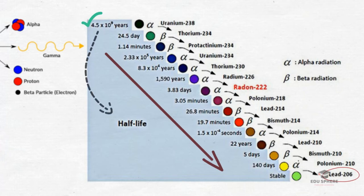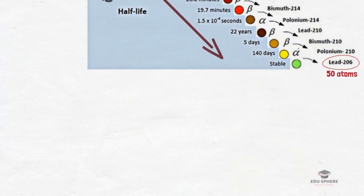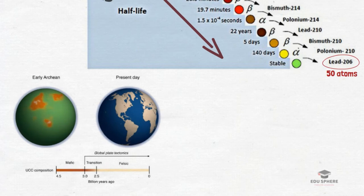It takes around 4.5 billion years for uranium-238 to convert to lead-206 through radioactive decay — so 4.5 billion years is the half-life of uranium, meaning 100 atoms of U238 would become 50 after 4.5 billion years. Since Earth was formed about 4.5 billion years ago, we can imagine dating excavated objects almost to the beginning of Earth's creation.